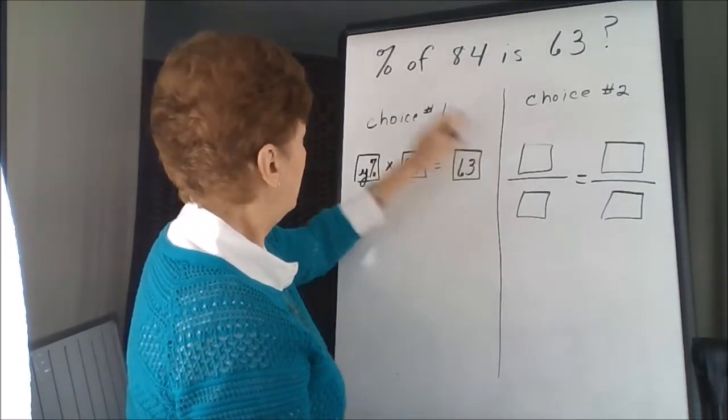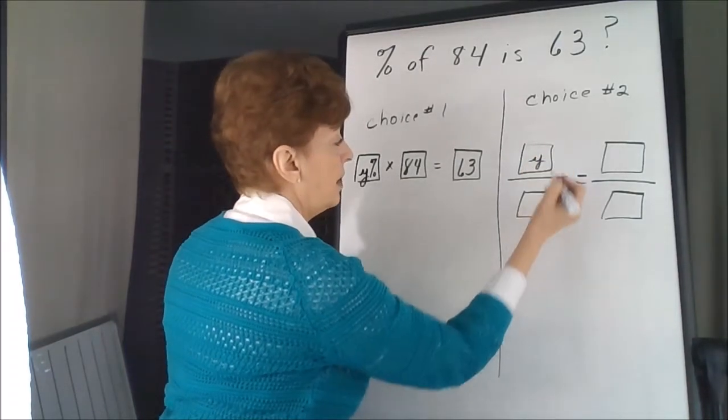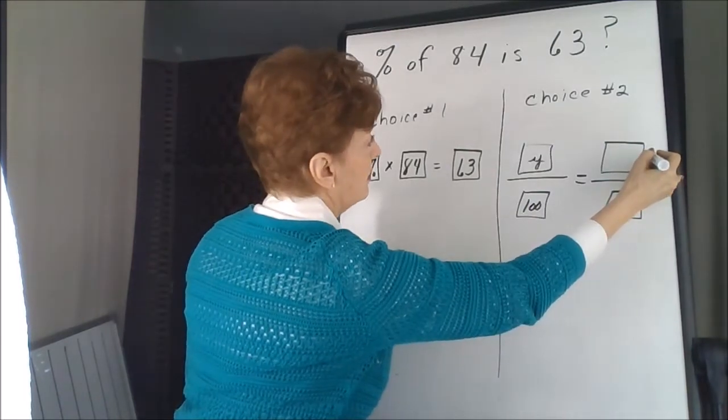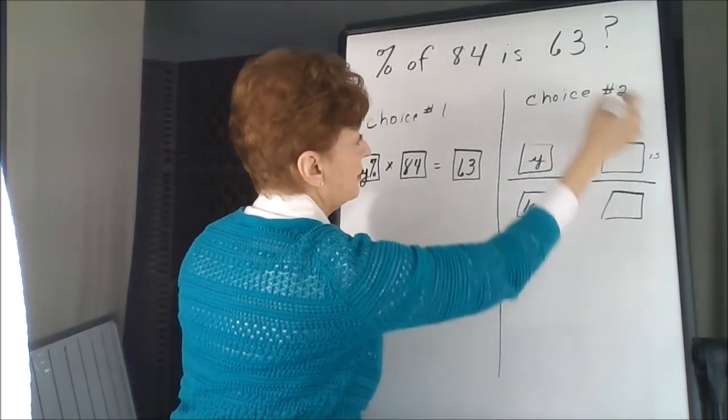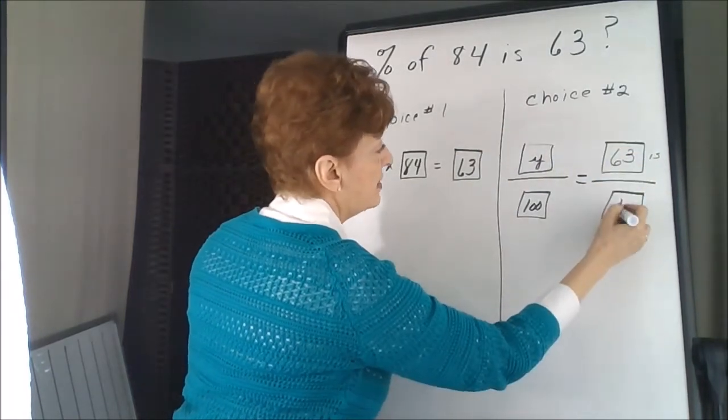Choice two, we do not have the percent so that's our y, but we know it's over 100. The is is first, so 63 is our numerator and the of is 84.